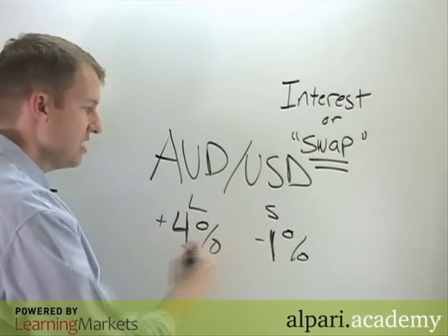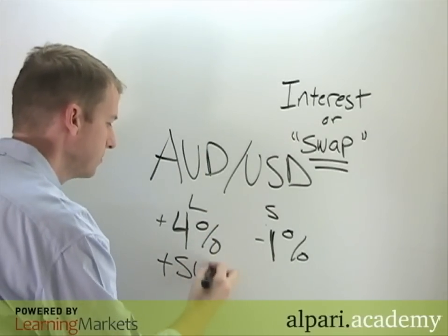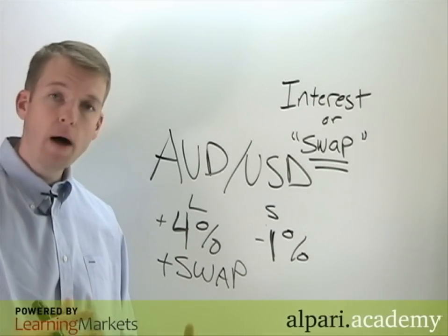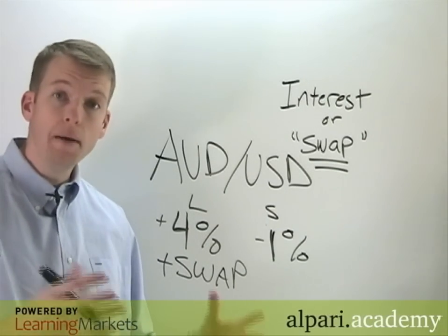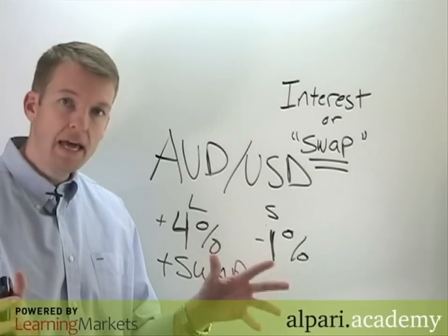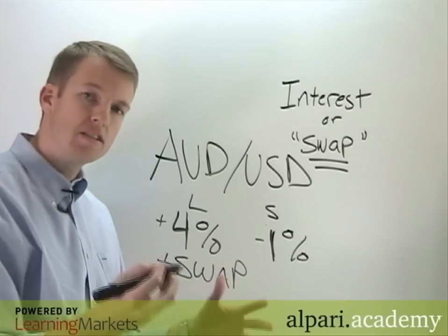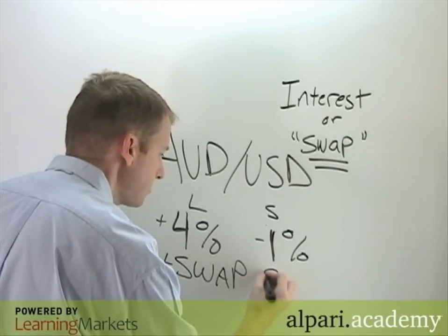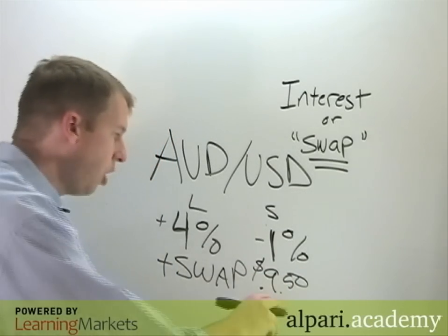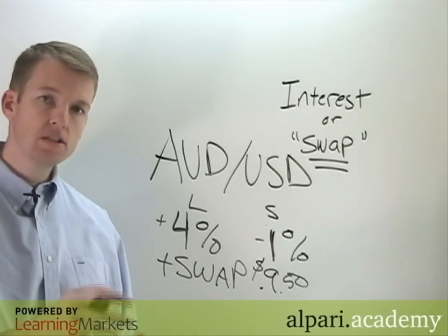If you're long the Aussie dollar exchange rate, then you get paid a small premium — you get paid swap. Right now the swap rate is just under one pip, which means that per lot. So if you own a full-size lot, you're being paid about $9.50 a day in swap. That's almost a full pip that you're being paid every day to hold one long position.